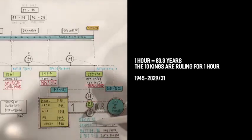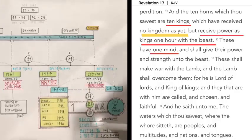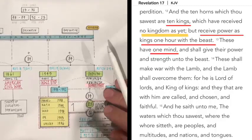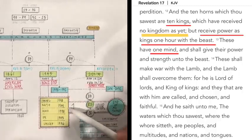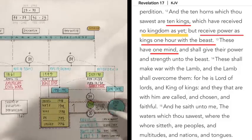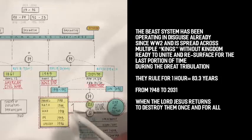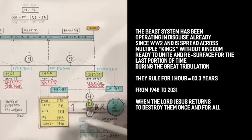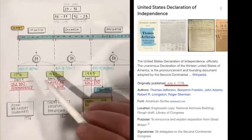If we go to Revelation 17:12, it says, and the ten horns which you saw are ten kings, which have received no kingdom yet, but receive power as kings for one hour with the beast. What does it mean? They're receiving power for 83.3 years, not as kings yet, with the beast system, for one hour. What hour? 83.3 years.